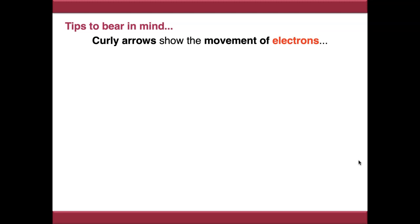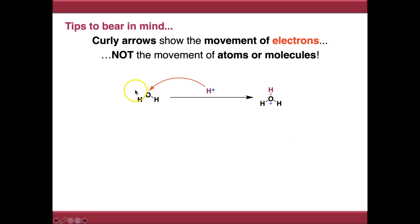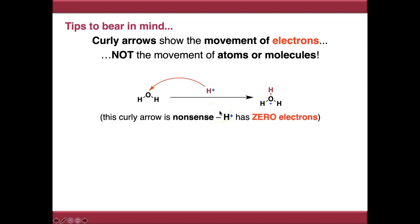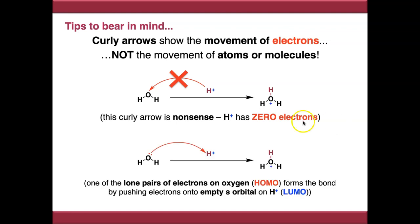Finally, remember curly arrows show the movement of electrons, not the movement of atoms, molecules, or moieties. For example, drawing an arrow from H⁺ onto water is nonsense because H⁺ has literally zero electrons — not even core electrons. The correct mechanism shows water as the nucleophile, with the HOMO being the lone pairs on oxygen attacking the empty orbital on H⁺. So always remember: curly arrows show the movement of electrons, not the movement of species or atoms.